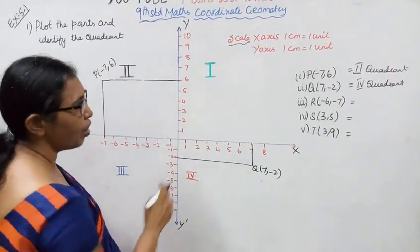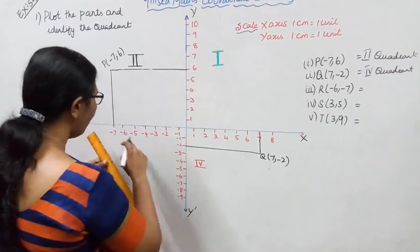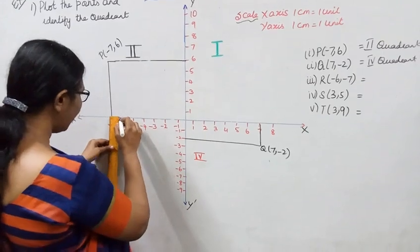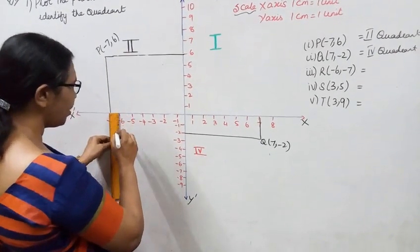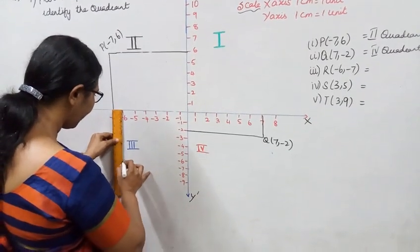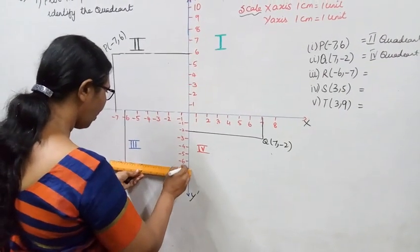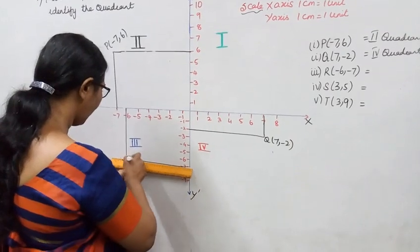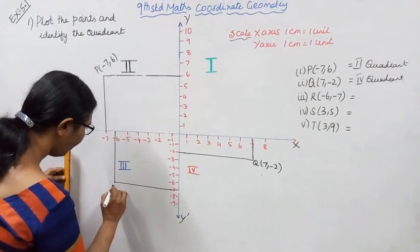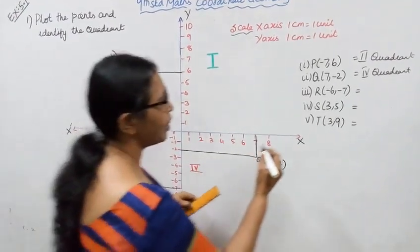It is easy to write. Point R is at (-6, -7). First we write minus 6, then minus 7. Minus 6 on the X-axis, minus 7 on the Y-axis. Since both are negative, R is in the third quadrant.